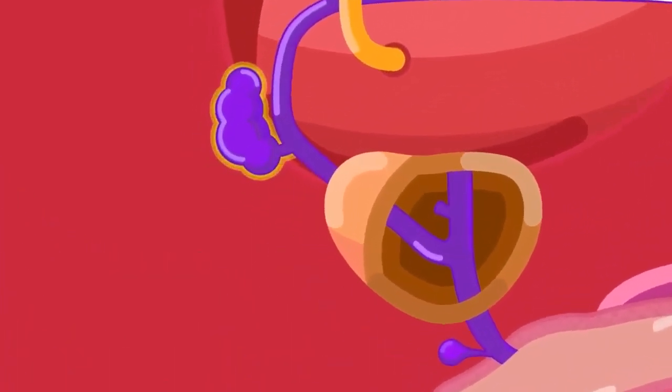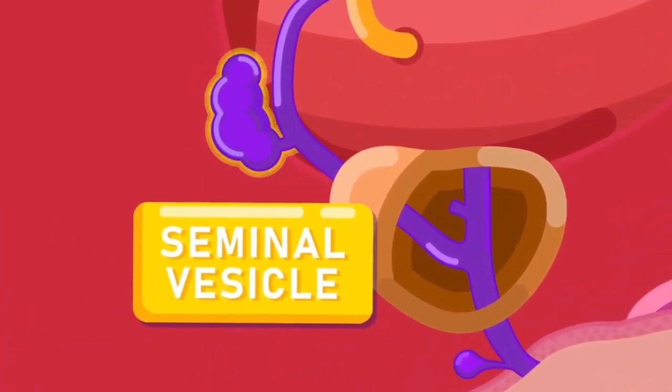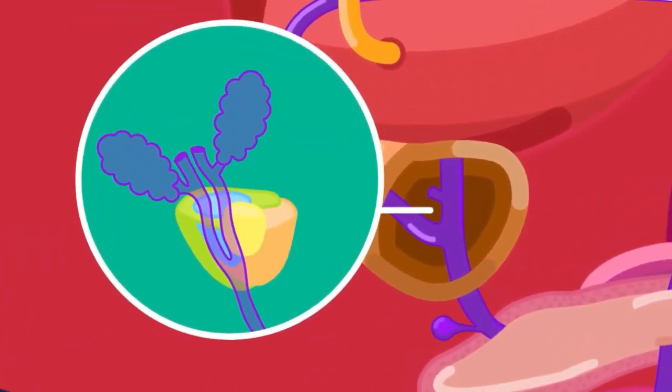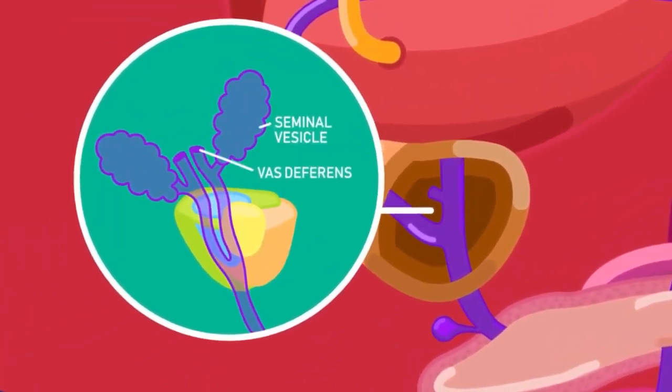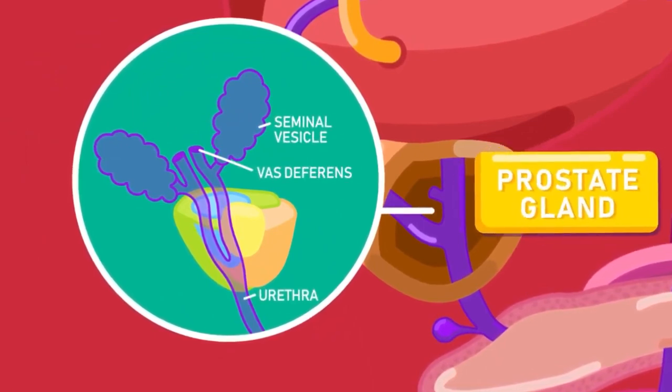A gland called the seminal vesicle opens into each sperm duct. At the base of the urinary bladder, where the two sperm ducts join the urethra, is the prostate gland.